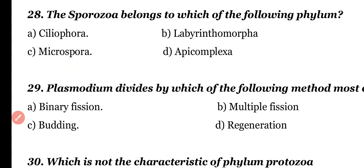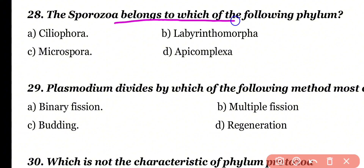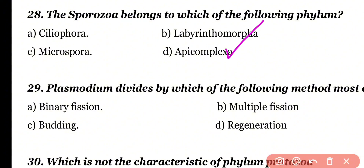Question number 28: Sporozoa belongs to which of the following phyla? Ciliophora, Labyrinthomorpha, Microspora, or Apicomplexa? Correct answer is option D. Sporozoa class belongs to phylum Apicomplexa of kingdom Protozoa.